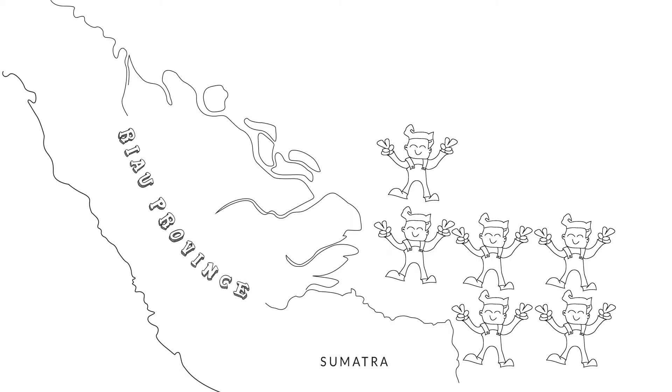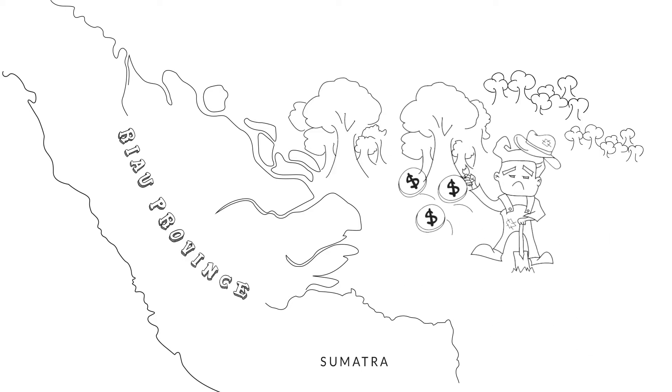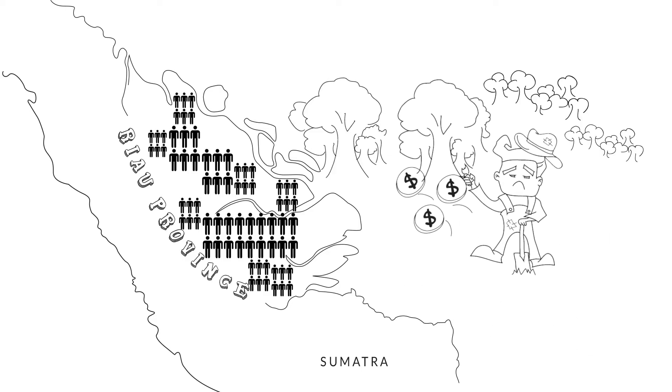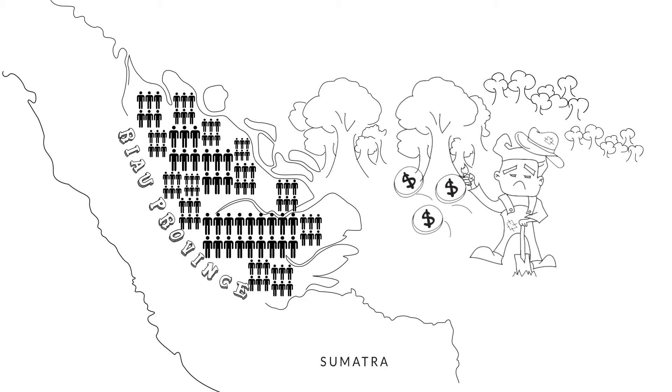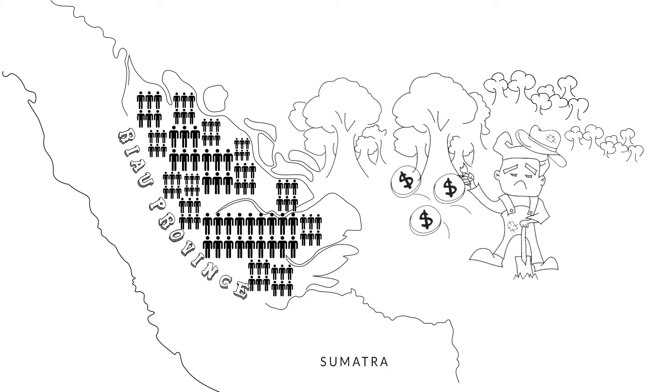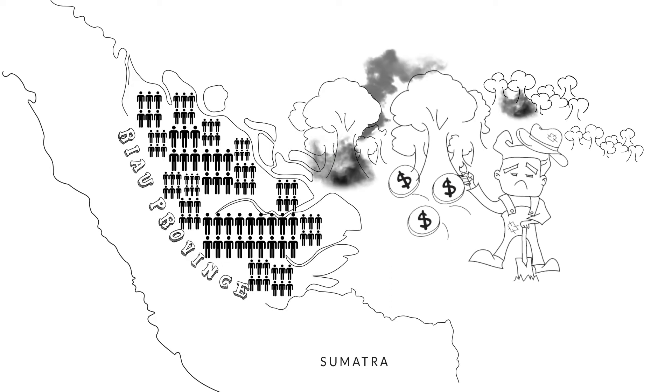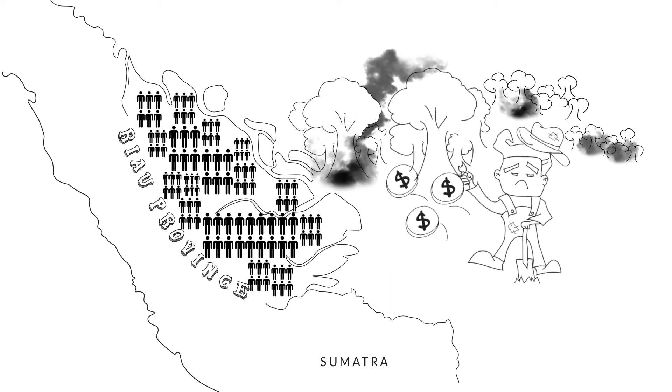Many residents of Riau depend on forestry activities to make a living. And with over 5 million residents and counting, there is an immense pressure for locals to clear land quickly and inexpensively. As a result, they often resort to illegal burning.